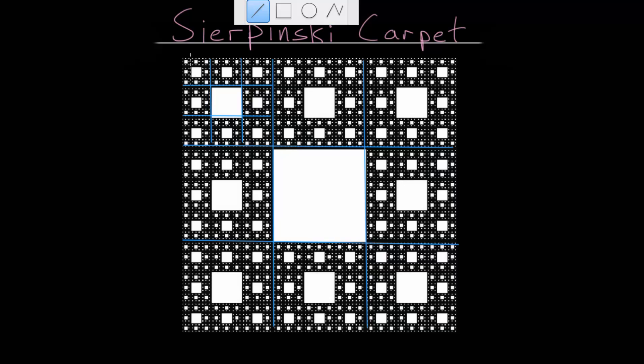And of course, this process is carried out infinitely many times. Every time we have a square, we split it into nine smaller squares and then remove the middle one.